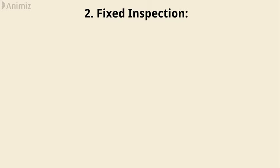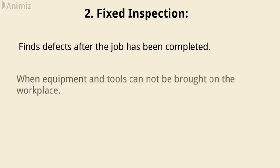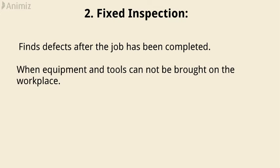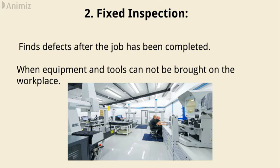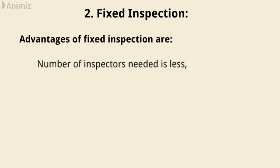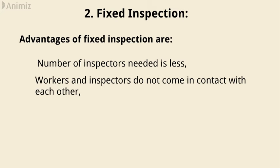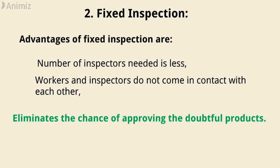Fixed inspection finds defects after the job has been completed. Fixed inspection is used when inspection equipment and tools cannot be brought to the workplace. In this case, workers bring the sample to a centralized position at intervals to check the quality. Advantages of fixed inspection are that the number of inspectors needed is less, and workers and inspectors do not come in contact with each other, thus eliminating the chance of approving doubtful products.